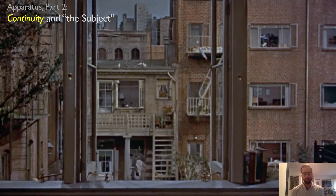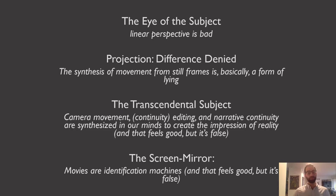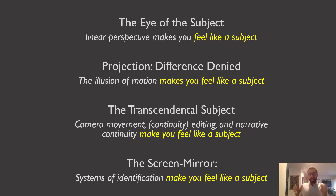Hi folks and welcome to a second video on Baudry and the apparatus. It should be a fairly short video that covers the second and third parts of the essay. What's going to yoke those two parts together is this idea of continuity and motion. I gave a quick summary of what each section is trying to accomplish, but there's an even more general thing that yokes all of these sections together, and I want to put it this way: each part of the apparatus that Baudry is identifying...